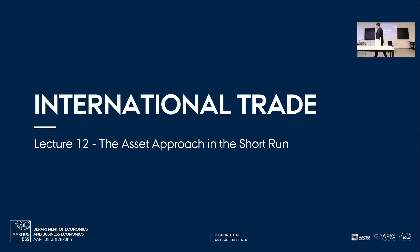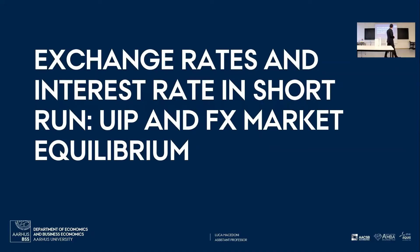Now, the asset approach in the short run. We saw in the long run that prices adjust and exchange rates are determined by monetary policy. What happens in the short run? Well, what's going to happen in the short run is going to be determined by our UIP — our uncovered interest parity condition.